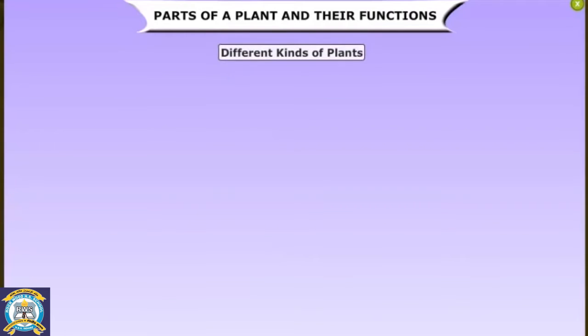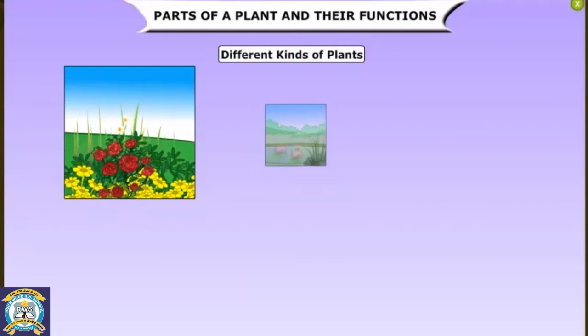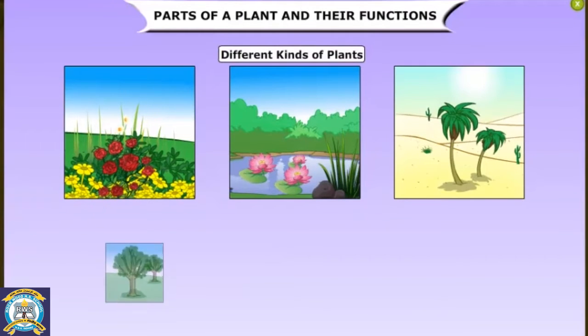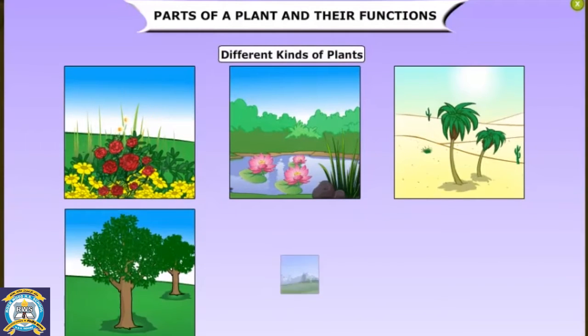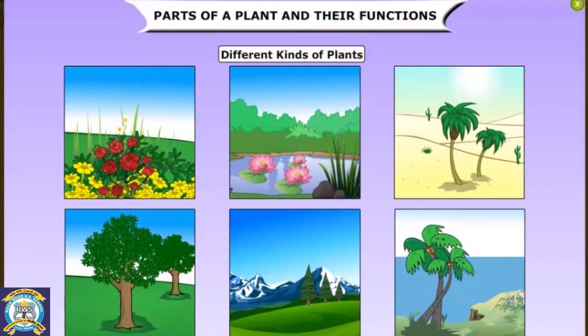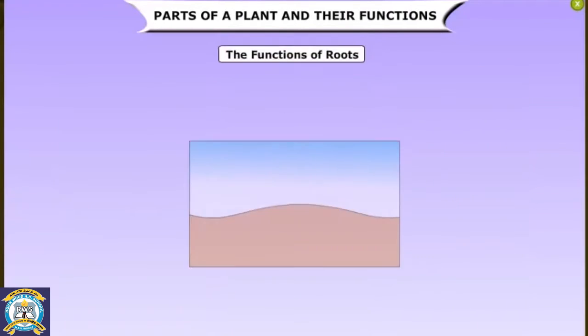Parts of a plant and their functions. There are thousands of varieties of plants that grow all over the world in different places. They may look different and have different kinds of parts, but the functions of the parts remain the same. Let us learn more about different parts of plants and their functions.